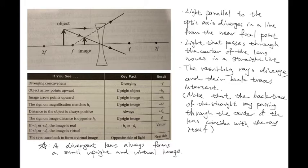Light that passes through the center of the lens moves in a straight line. The resulting rays diverge and their backtraces intersect. And note that the backtrace of the ray passing through the center of the lens coincides with the ray itself.